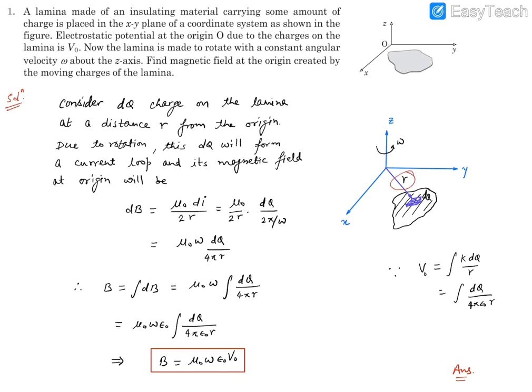Now this moving charge will be behaving like current. Hence there will be differential magnetic field at the origin because of this charge dq. If corresponding current is di, then we know the magnetic field at the center of a circular loop is μ₀ times the current divided by 2 times radius. Now this di can be written as dq divided by the time period of rotation, that is 2π by ω, which will simplify to ωμ₀dq upon 4πr.